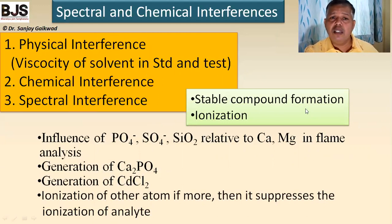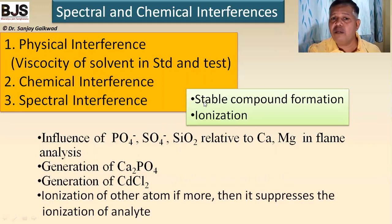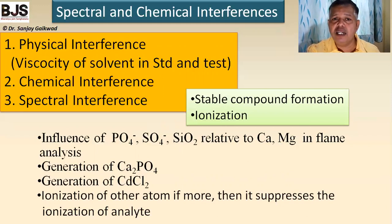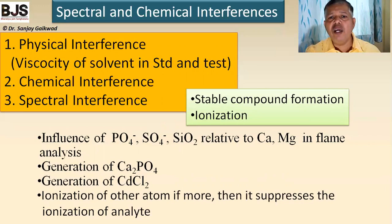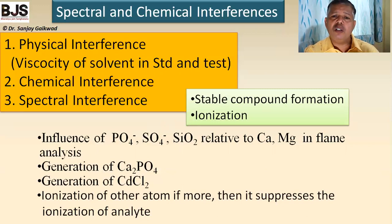Chemical interferences include stable compound formation in solution. If a metal forms insoluble compounds, it cannot be aspirated into the flame and therefore cannot be detected. For example, if phosphate, sulfate, or silicate ions are present in solution, the metal may form insoluble phosphate, sulfate, or silicate salts which remain in solution and are not aspirated. Such chemical interferences must be identified and removed by changing the preparation procedure.